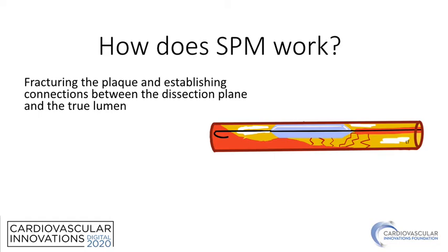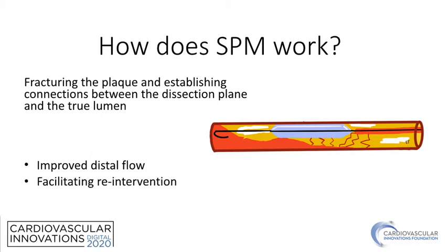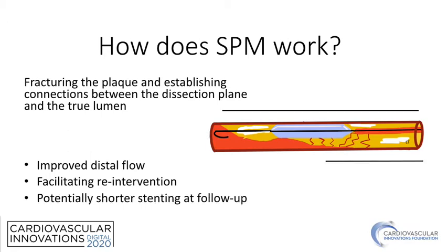How does sub-intimal plaque modification work? By fracturing the plaque, you establish connections between the dissection plane and the true lumen. This can lead to improved distal flow — sometimes to the extent that no additional intervention is needed at follow-up. It can also facilitate re-intervention, since you've already created a space that can be wired, achieve true lumen re-entry at an earlier point, and potentially allow shorter stenting at follow-up if re-entry can occur upstream from the knuckle re-entry point.